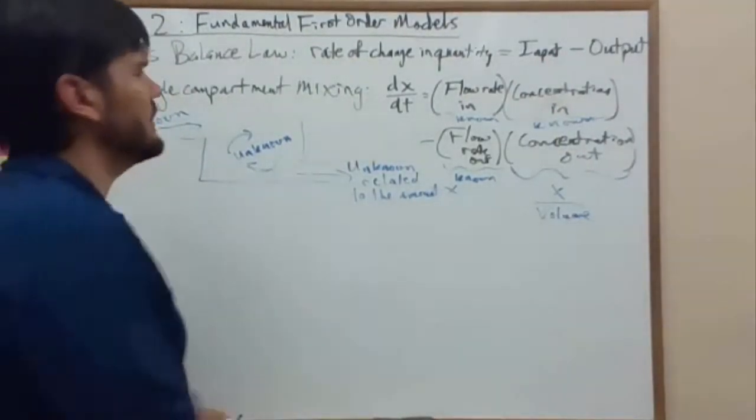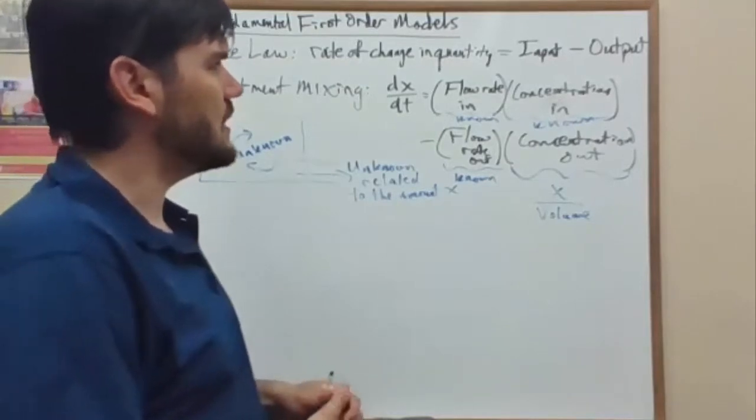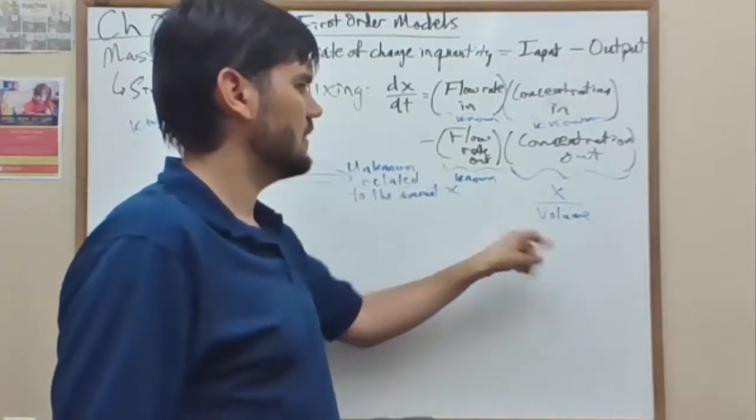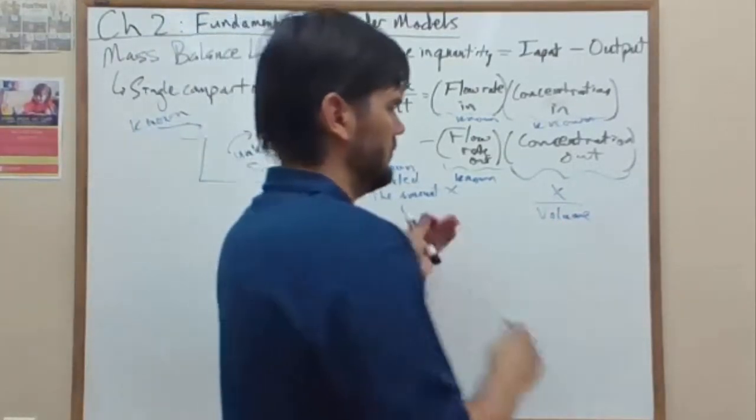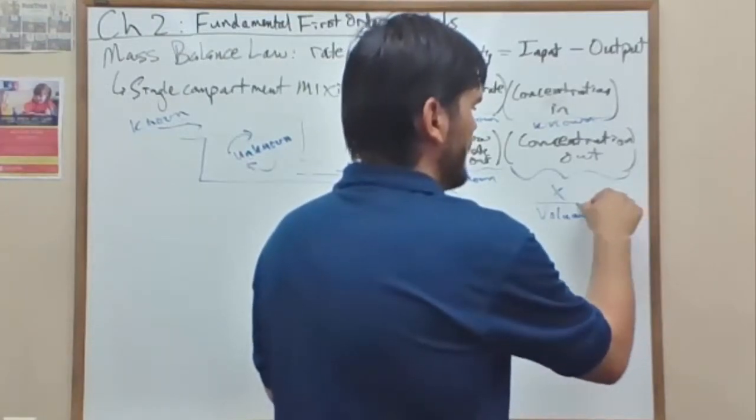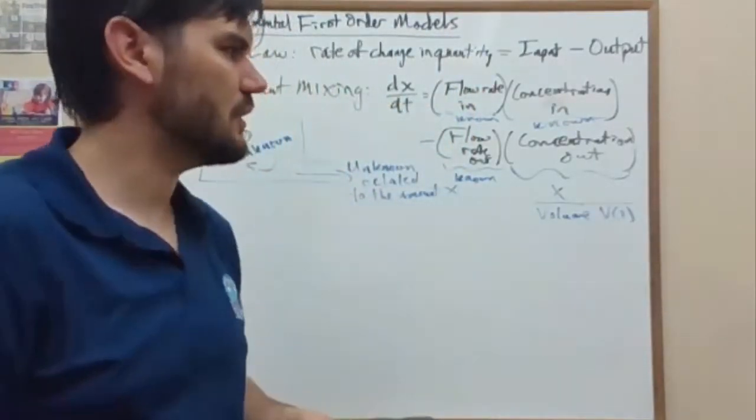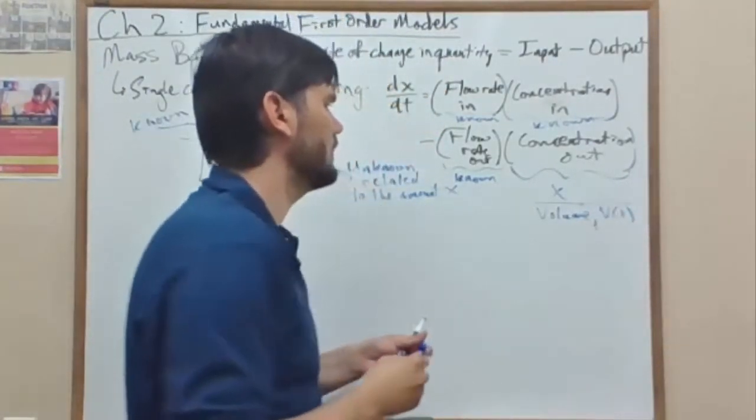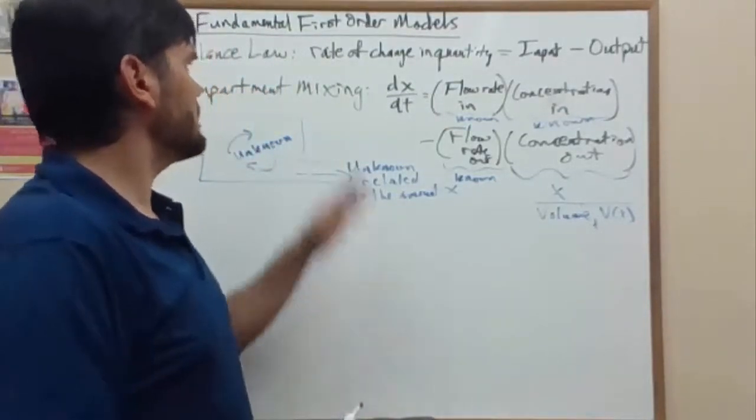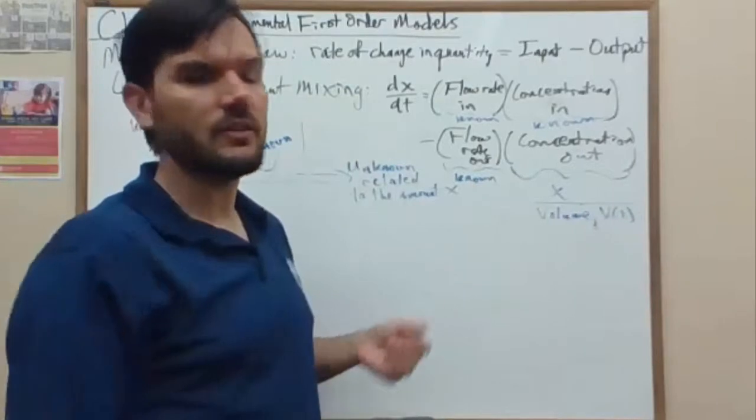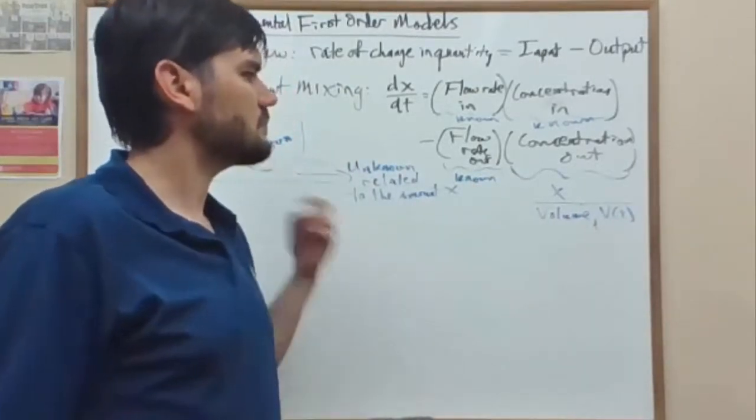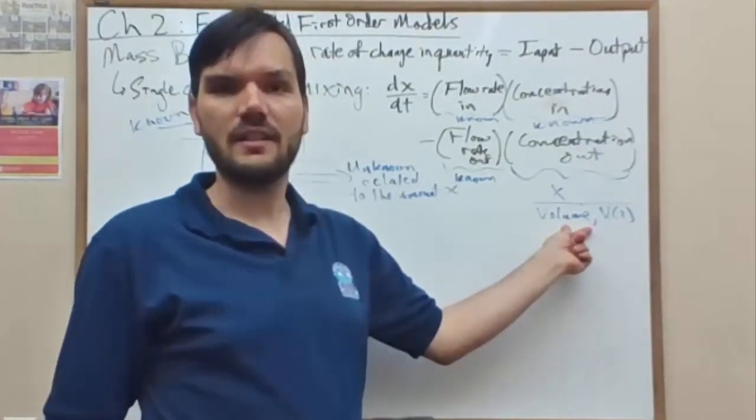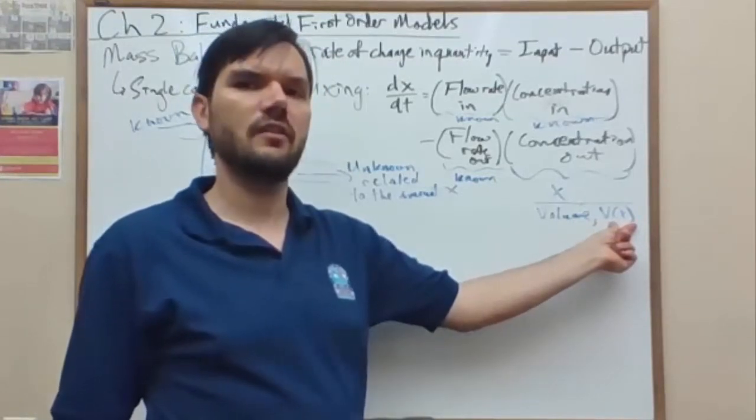So that is a single compartment mixing problem. Notice that the unknown variable x shows up in a linear term. Volume is going to be changing with time, but not changing with concentration x. So this mixing problem, though a little bit complicated in its formation, is linear. It's always linear.